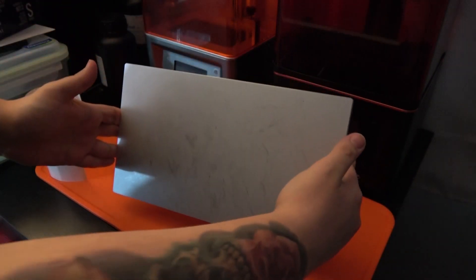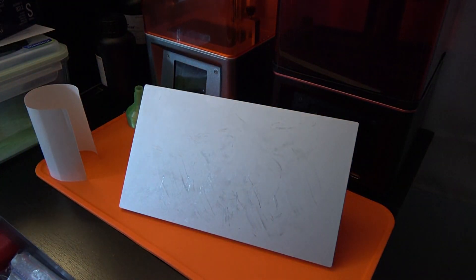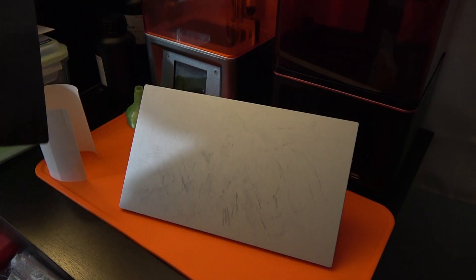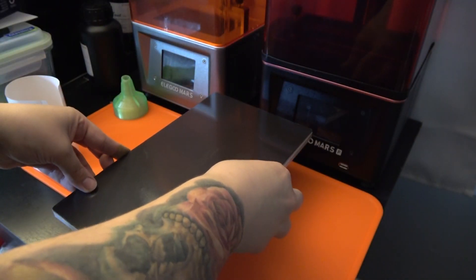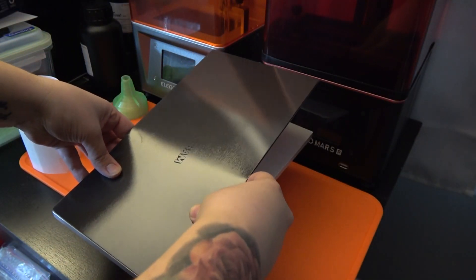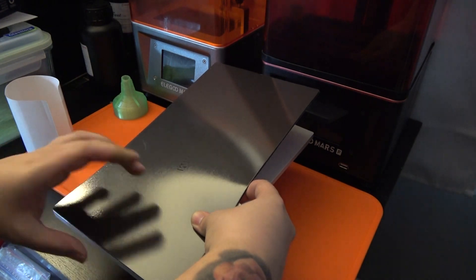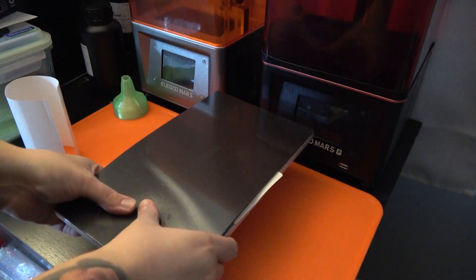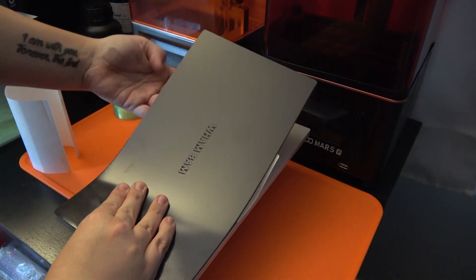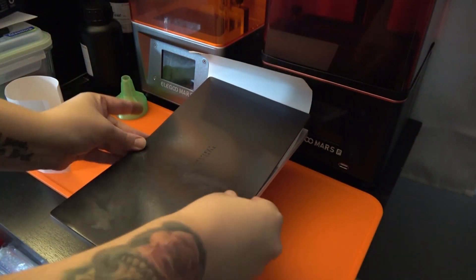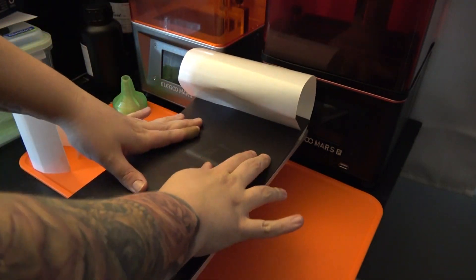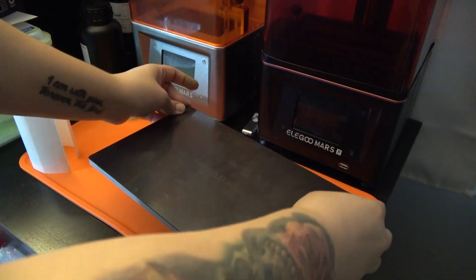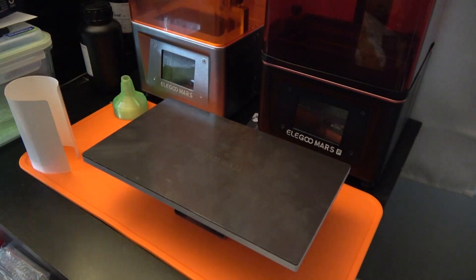Now we've got the massive Peopoly Phenom. Honestly, I was a little scared to attempt to apply this because of how big it is, but it was just as easy. Exact same thing, line it up and slowly apply it. So as you can see, they are super easy to apply. Your main thing is that you're just going to want to make sure that that build plate before you apply is very clean.